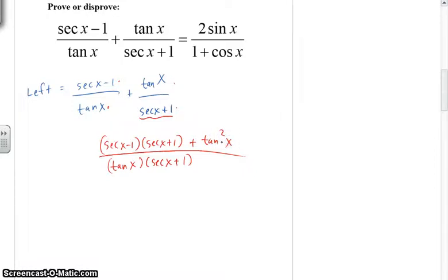So why don't we multiply out this up here. It's going to be secant squared x minus one plus tangent squared x. And this is tangent of x times secant x plus one.